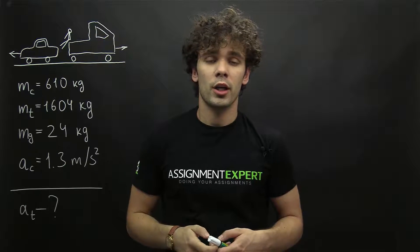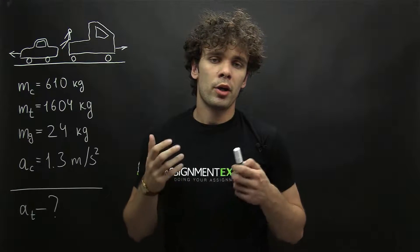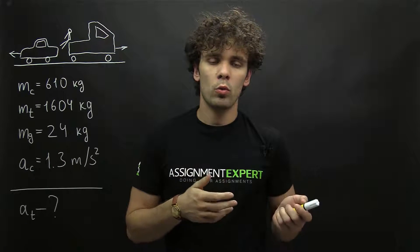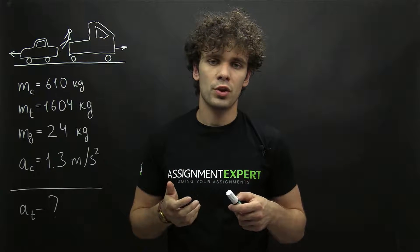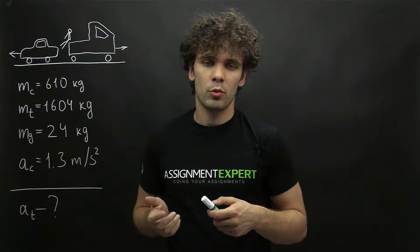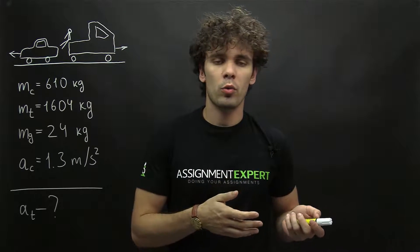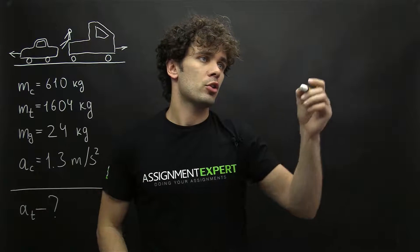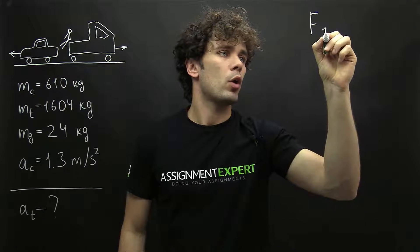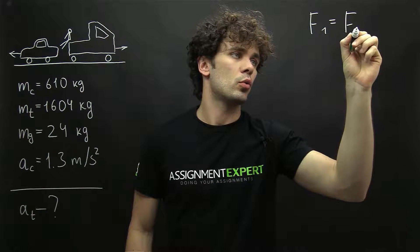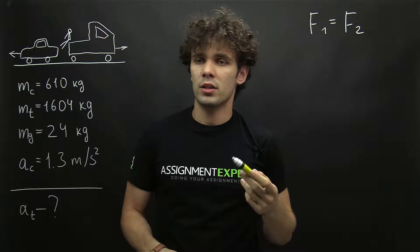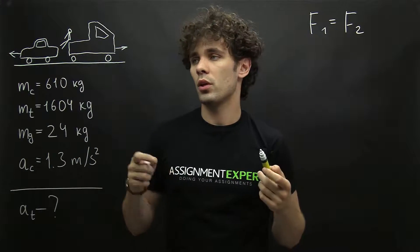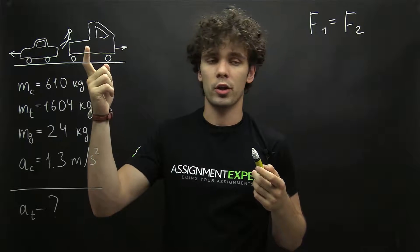According to Newton, when there are two objects and one of them applies a force to the other, there is always a counterforce equal to this force. So we can say that action always causes reaction, and this can be described by the formula F1 equals F2, where F1 is the force applied to the car and F2 is the force applied to the truck with the girl.